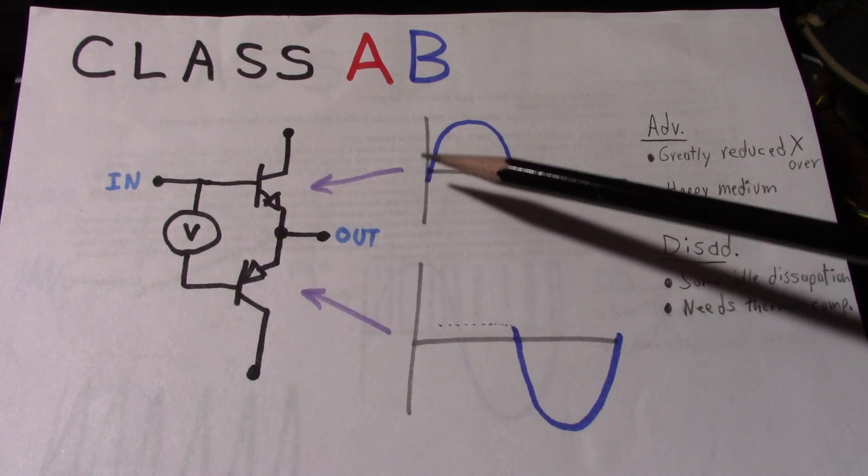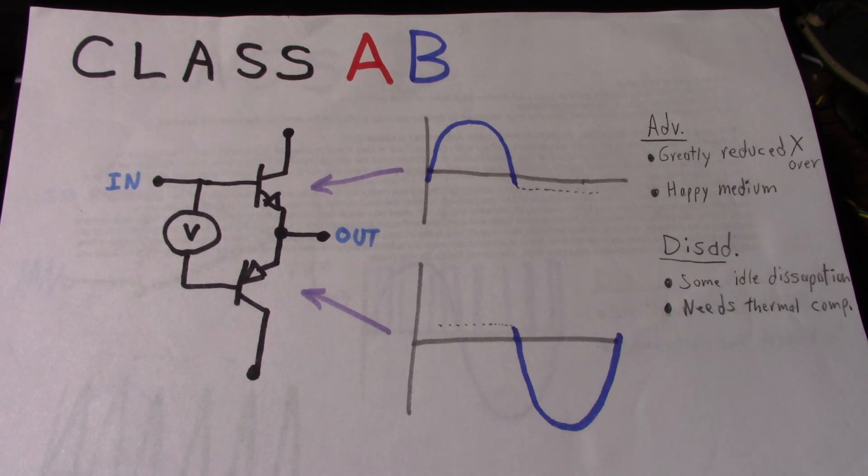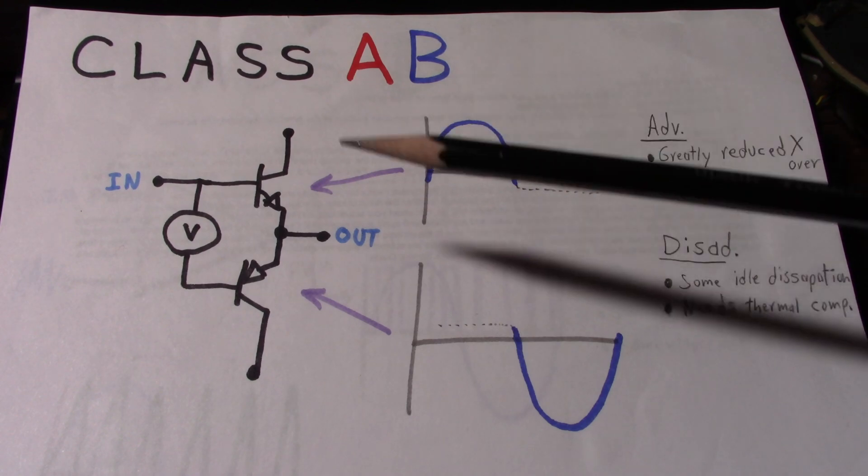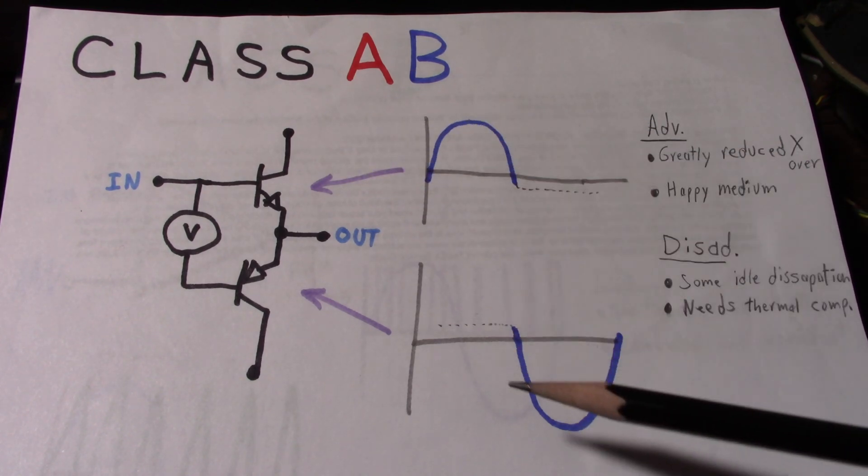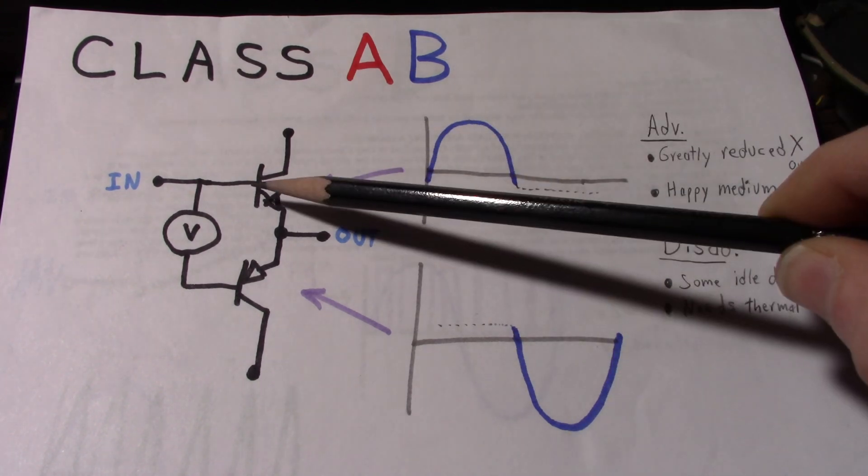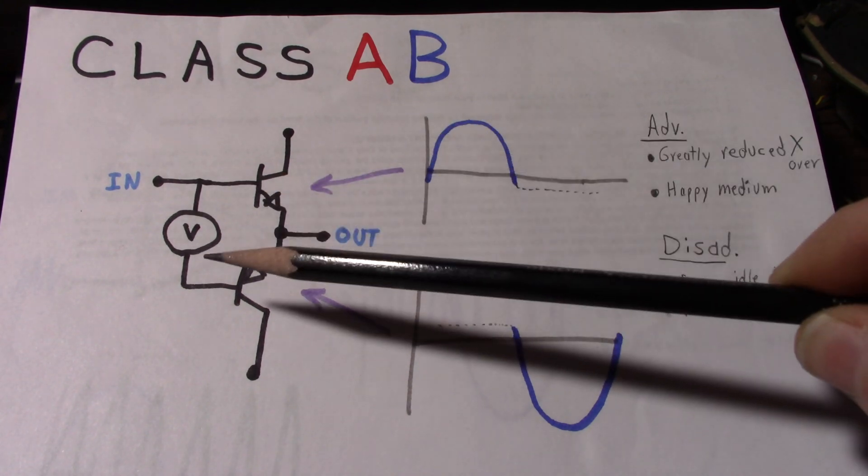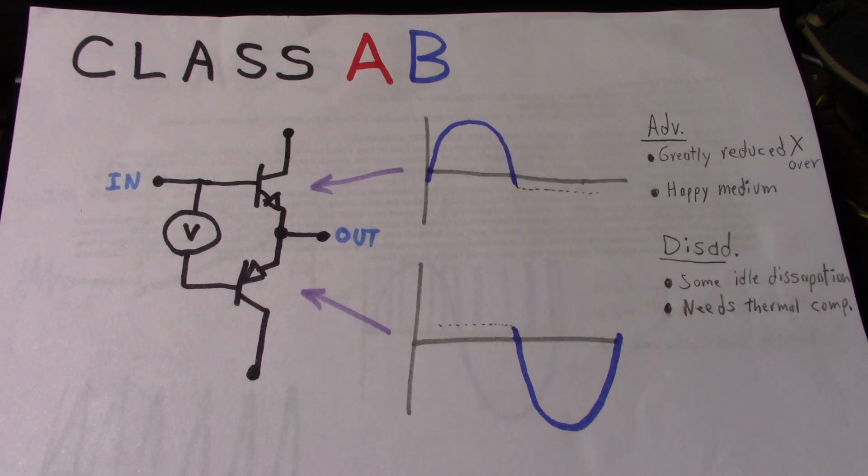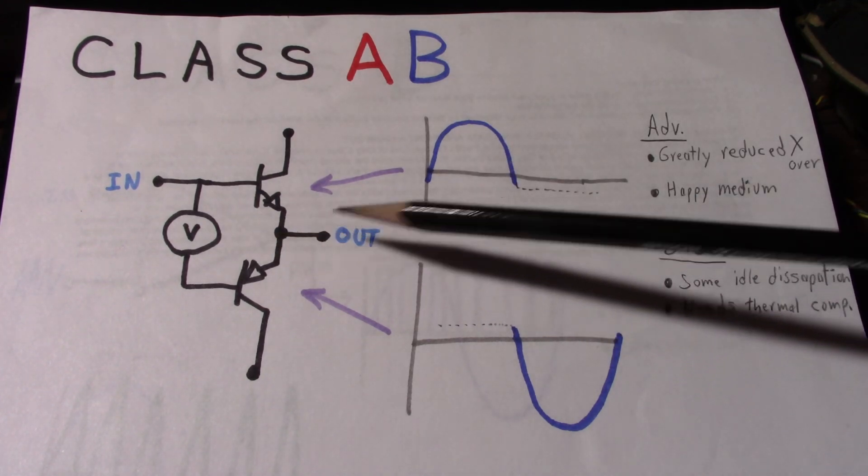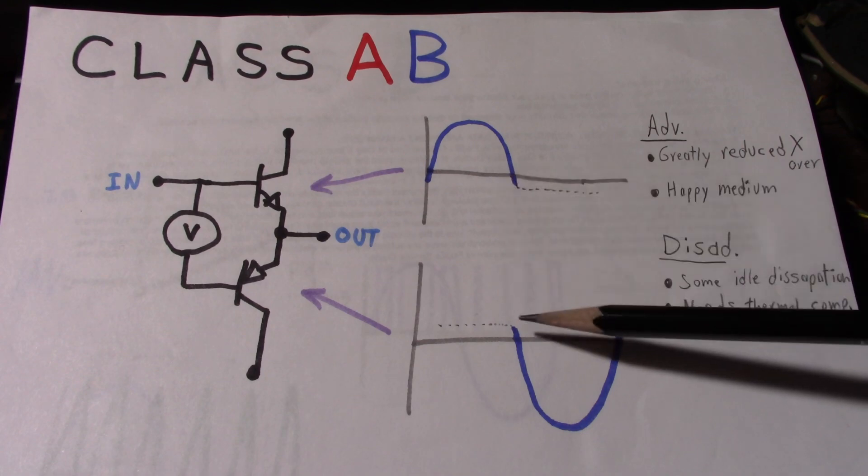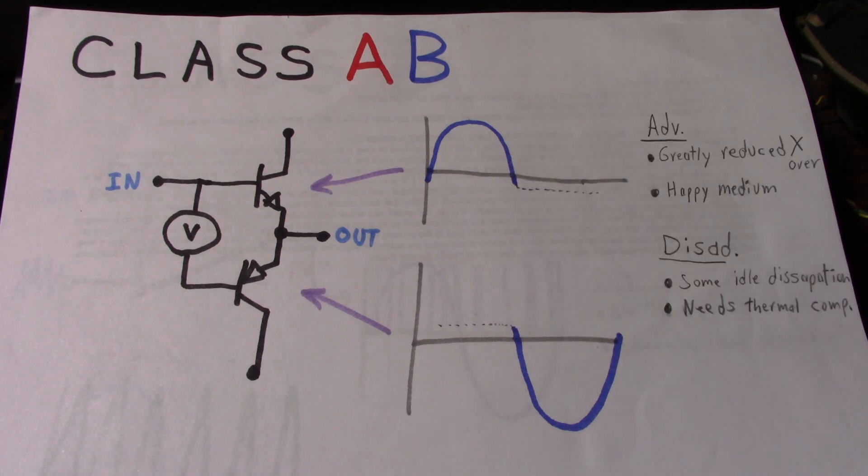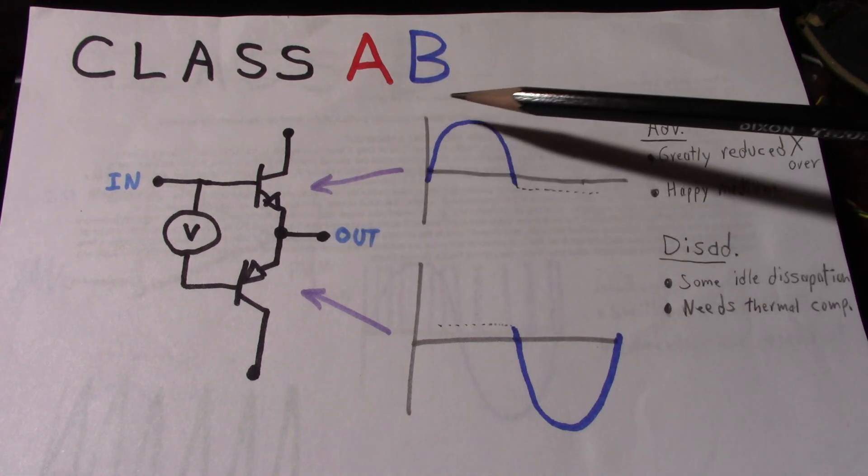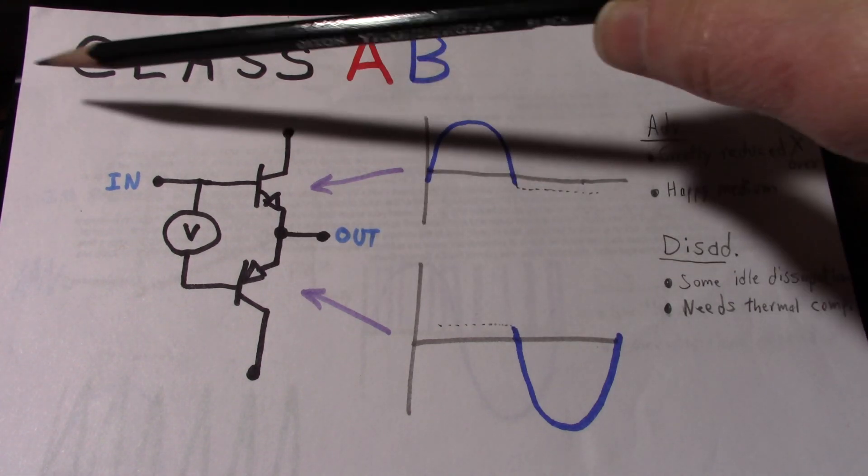So we still have the upper transistor handling the top part of the signal, the bottom the lower part of the signal. That eliminates that big dead zone. So now the transistors are truly conducting the whole signal. The top still handling the top and the bottom the lower portion, but it's a smooth transition. In fact, with a small signal which is inside the overlapped portion, the amplifier is actually in Class A. And when it's outside that, it's Class B. So that's where it gets its name.